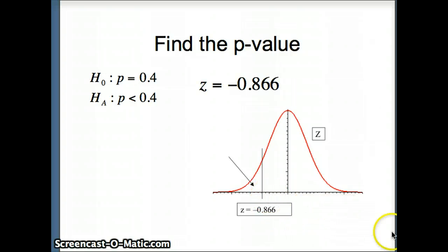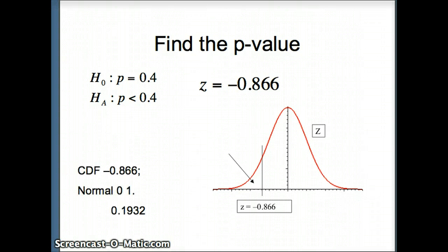And we're going to get that area from Minitab. What we're going to ask is cdf, negative 0.866, normal 0, 1, since it's a z, normal distribution, mean of 0, standard deviation of 1. And the probability that comes back is 0.1932. So this area is 0.1932. And that will correspond to our p-value. So our p-value in this situation is 0.1932.